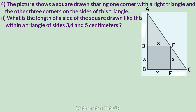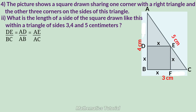Second question: what is the length of a side of the square drawn like this within a triangle of sides 3, 4, and 5 cm? AB = 4 cm, the square has side x. We proved that DE/BC = AD/AB = AE/AC. DE is the square side, so DE = x. BC is a side of the triangle, that is 3 cm. AD from the figure is 4 − x, and AB = 4 cm.